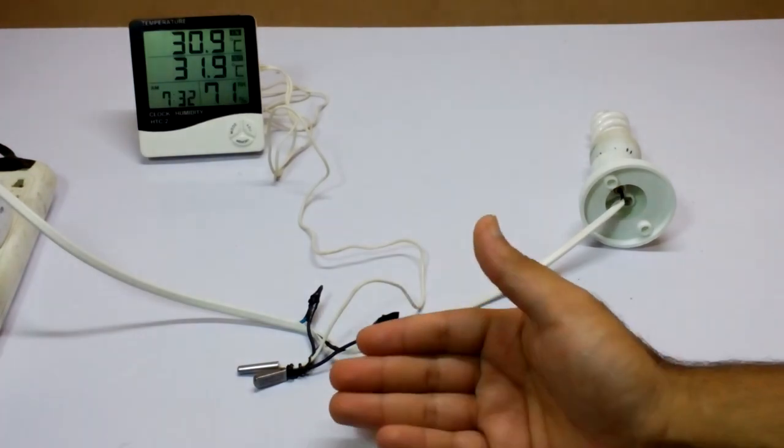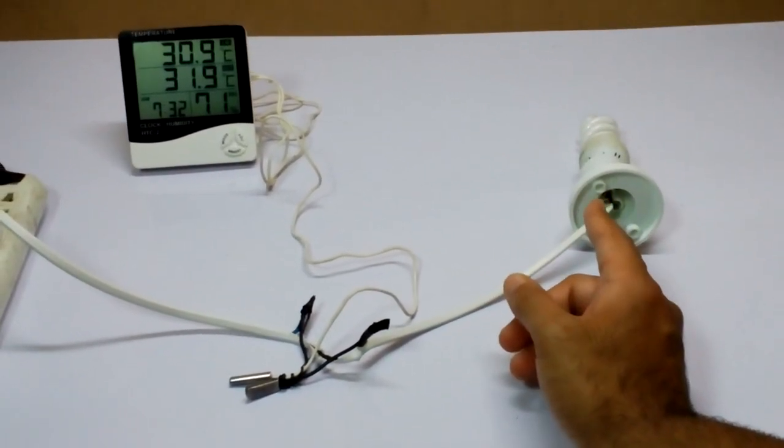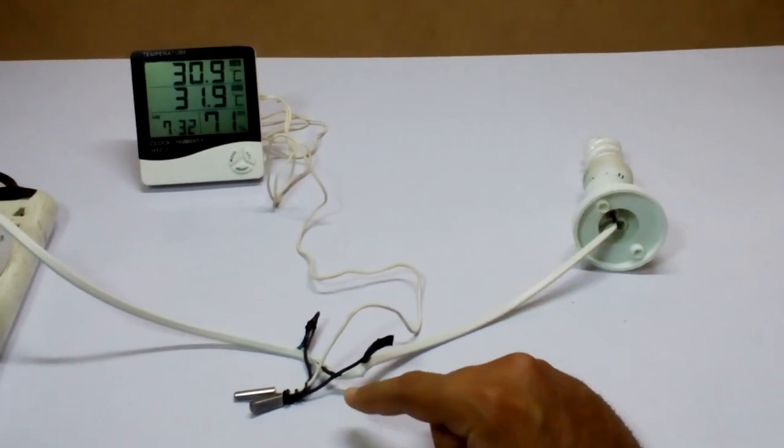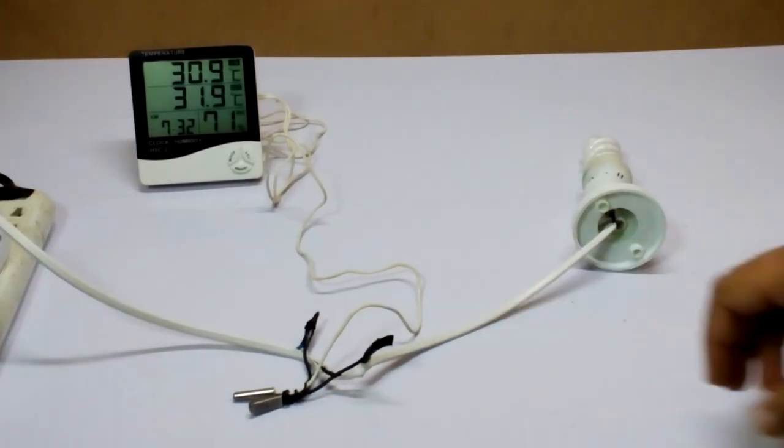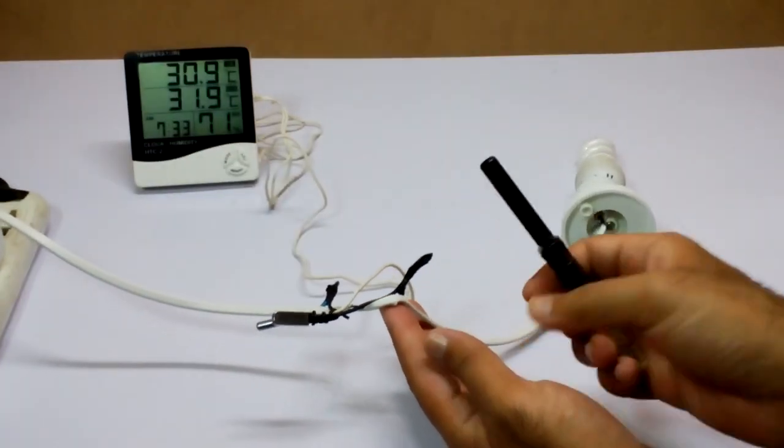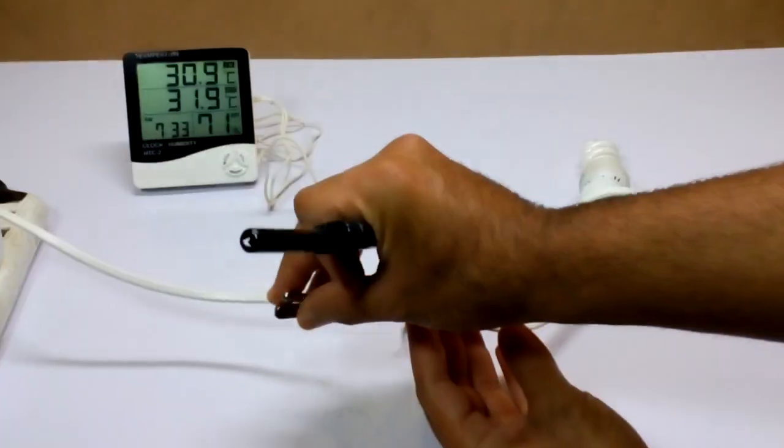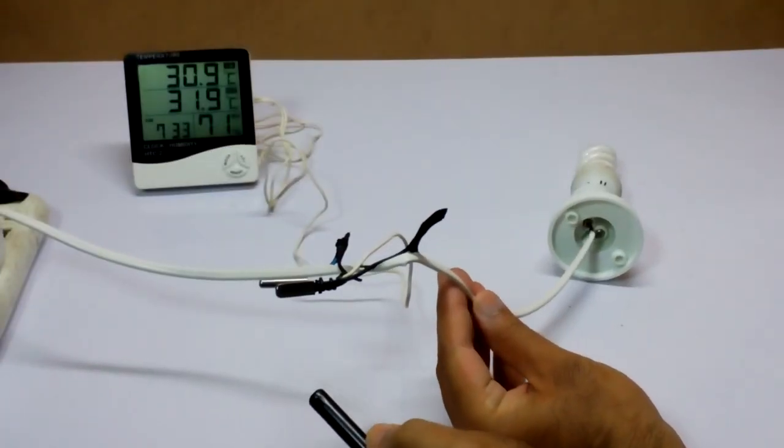I have connected it to 220 volt but it's not turning on the bulb because it is not allowing any kind of current until it reaches 40 Celsius. So I am going to give it some kind of simulation for heating.